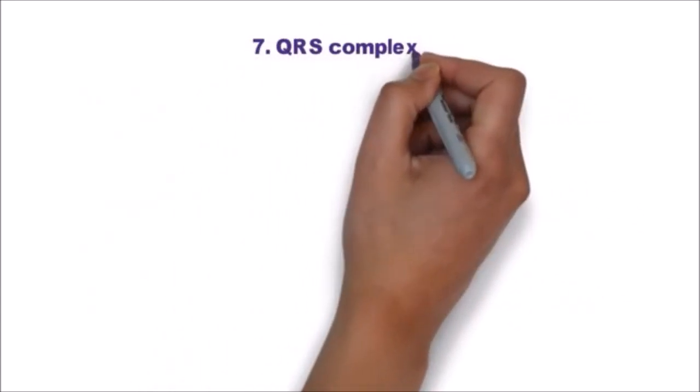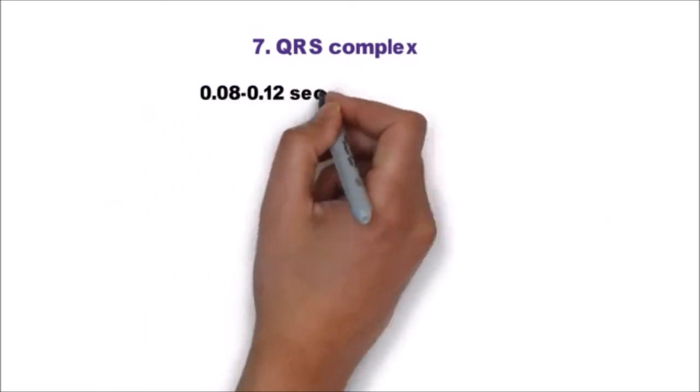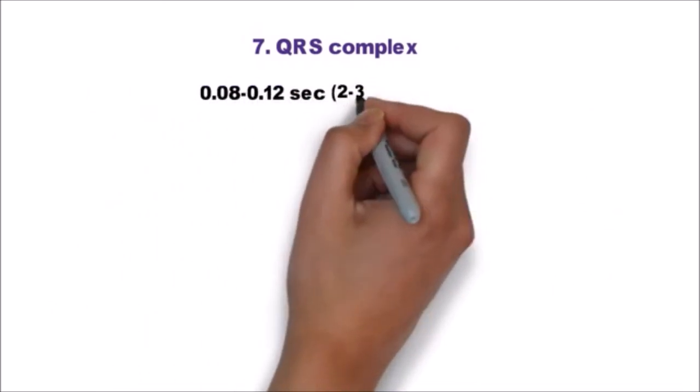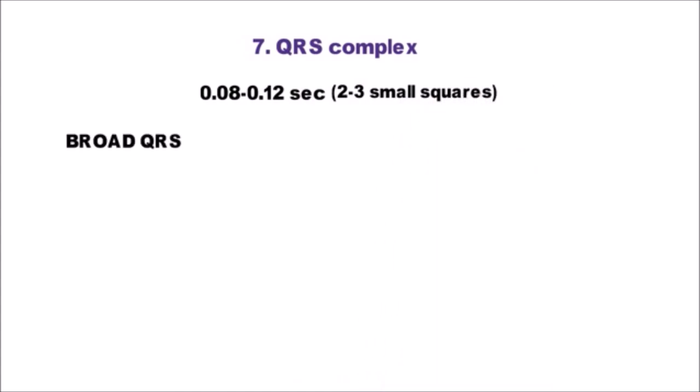Step 7 is QRS complex. Normally it is 0.08 to 0.12 seconds, that is 2 to 3 small squares.